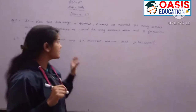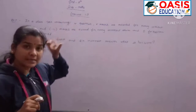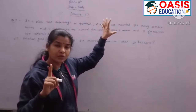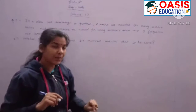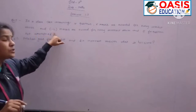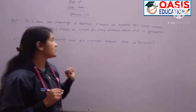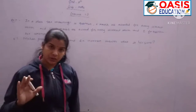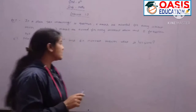So in the class test, for every correct answer we give 5 marks. There are 10 questions, each worth 5 marks if correct. Every incorrect answer gets minus 2 marks, and zero marks for questions not attempted.